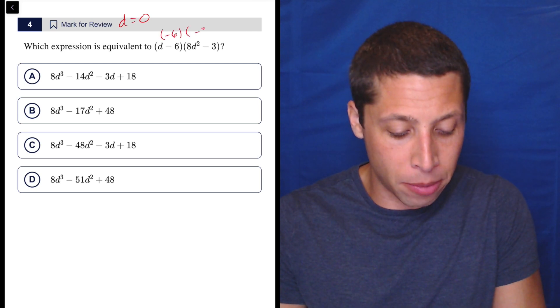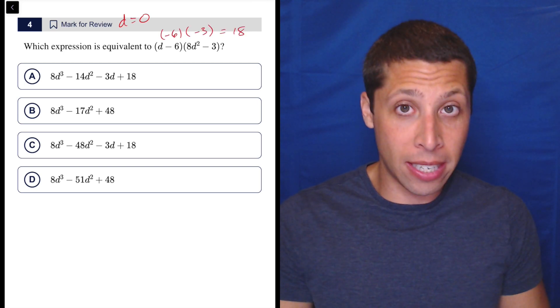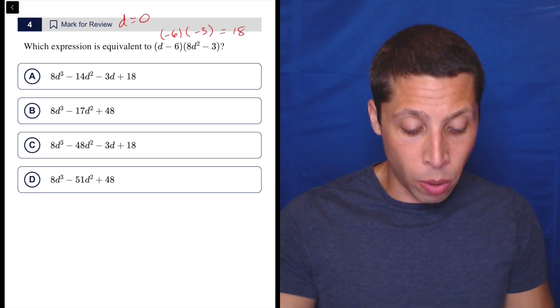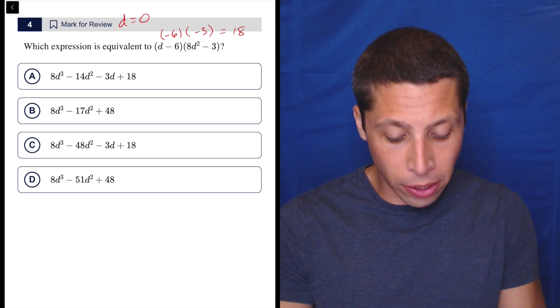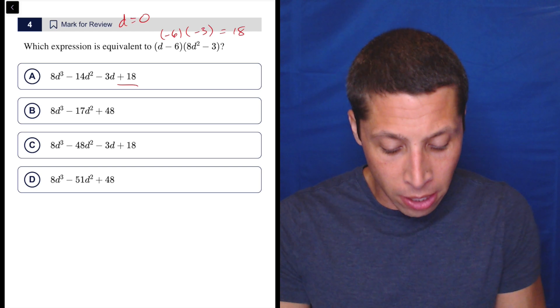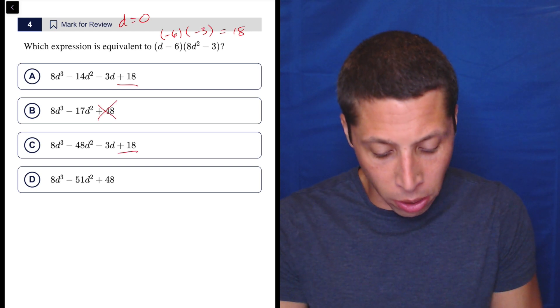This would be negative six times negative three. That's positive 18. And because zero is going to knock out anything with a D in it, we can just see very quickly we have an 18 here, we have an 18 here. Not going to work. Not going to work.